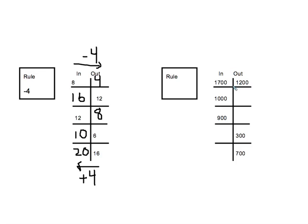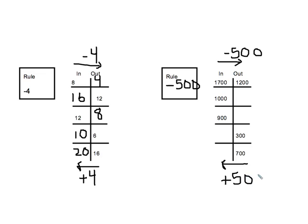Now this one's a little bit more challenging. The numbers are bigger and we don't know the rule, but that doesn't mean you can't solve it. You look for the two values that are both given. I have 1,700 and 1,200. Since I'm going from big to small, I know that I'm subtracting. 1,700 and 1,200 are 500 apart — because 7 is 5 away from 2 — so I must be minusing 500. Every time I follow the rule from in to out, I get smaller by 500. But any time I go backwards from out to in, I get bigger because I add 500. So 1,000 minus 500 is 500.